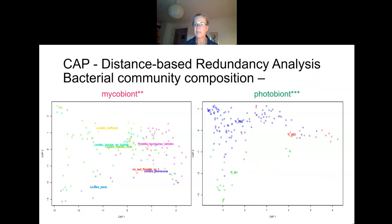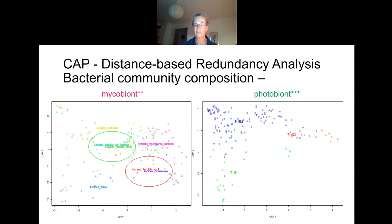The bacterial composition was also strongly influenced by the identity of the mycobiont species and photobiont OTUs. Interestingly, the two Lecidea lapicida clades have a similar bacterial community composition, as do the Porpidia species.